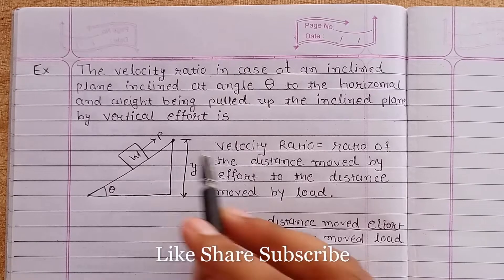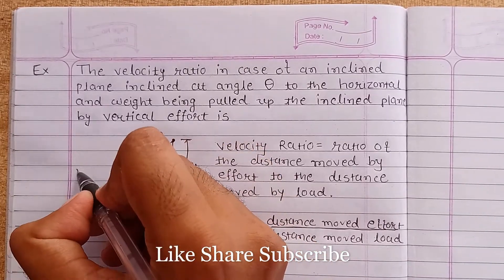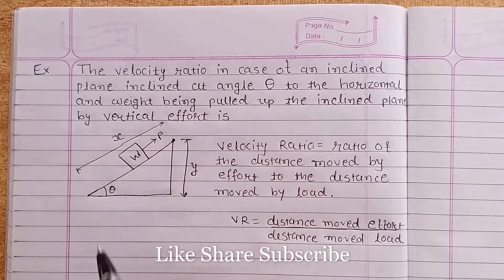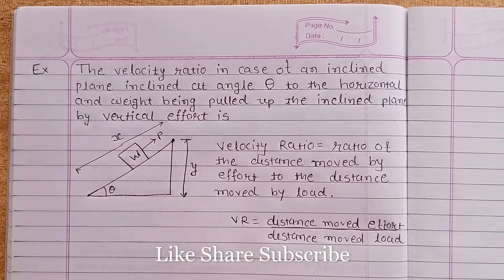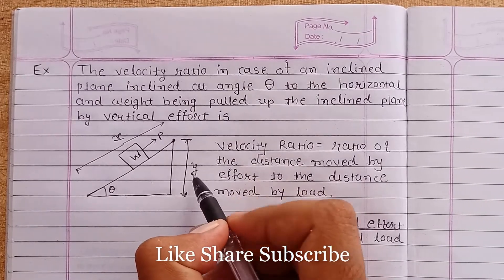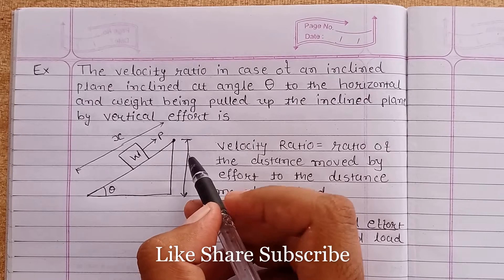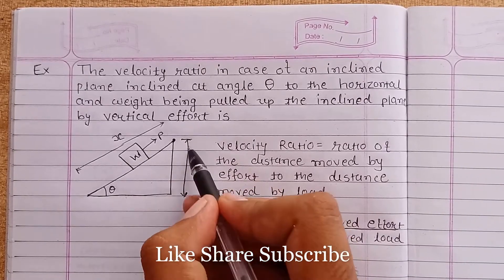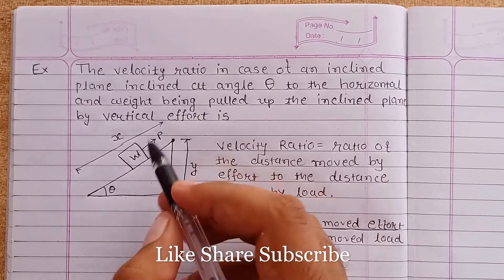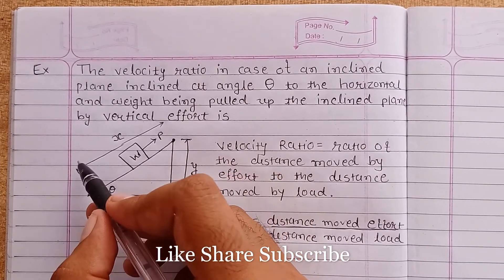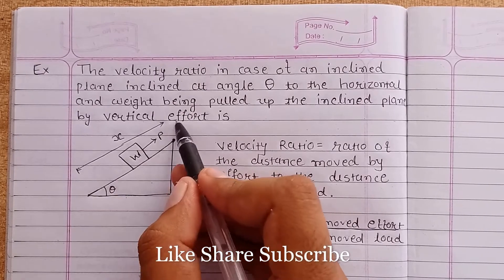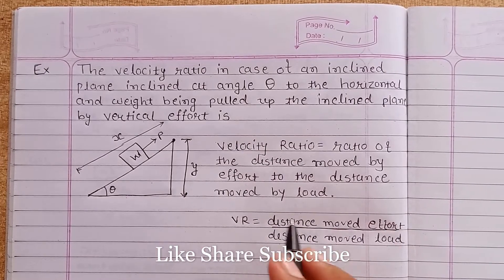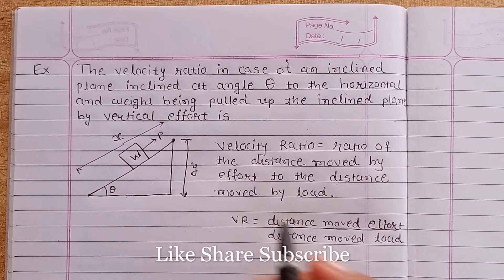So this is the distance covered by the effort P. Because of the effort P, our load has achieved this much vertical distance, and load itself has covered distance equal to the hypotenuse of this right angle triangle. So let's put that distance over here: VR equals...